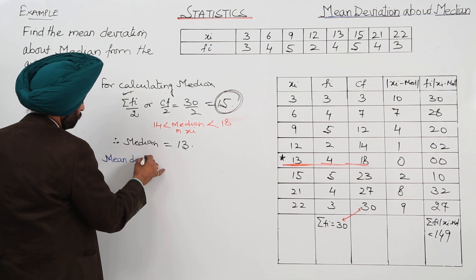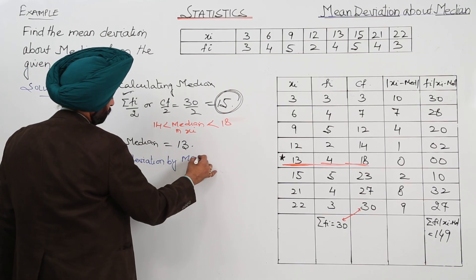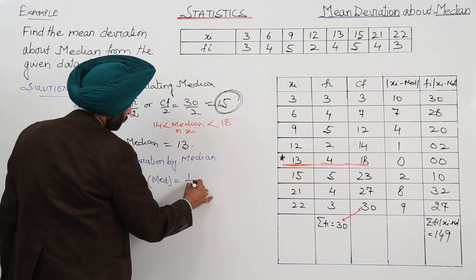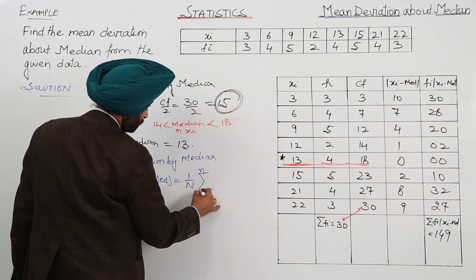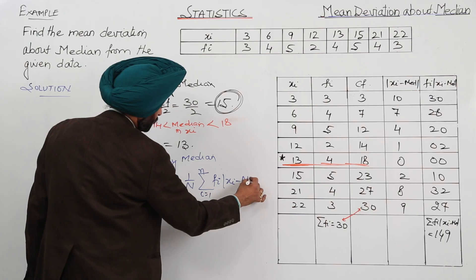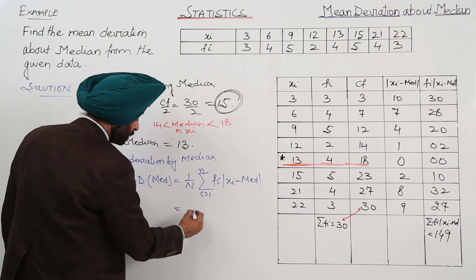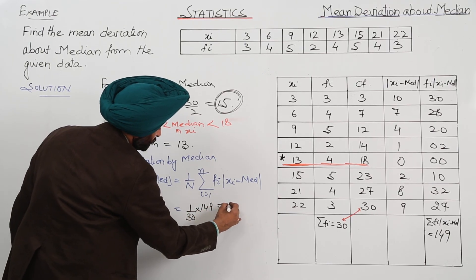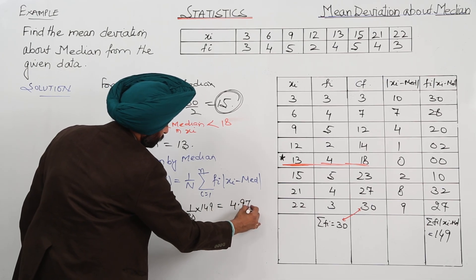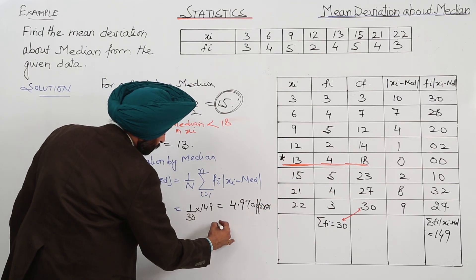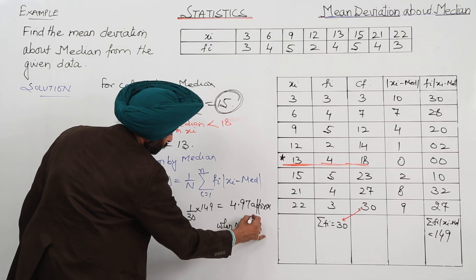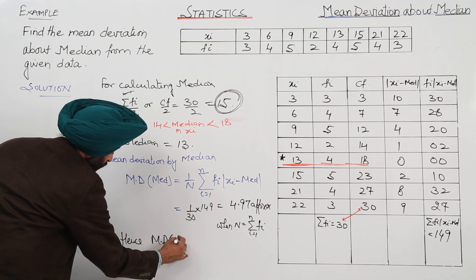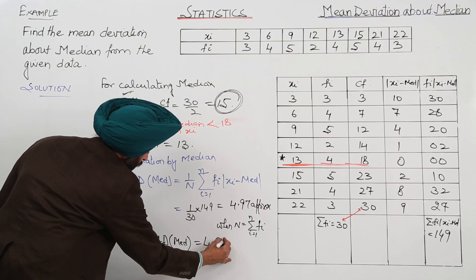Mean deviation by median. 1 upon n summation for Fi, Xi minus median. This is equal to 1 upon 30 times 149. This will be now 4.97 approximately. Where n is equal to summation for Fi. Hence mean deviation about median for the question is 4.97. This is the answer.